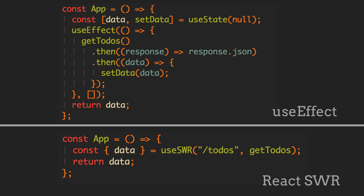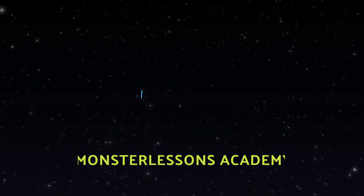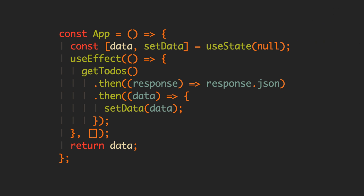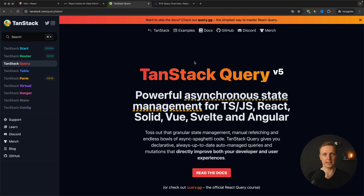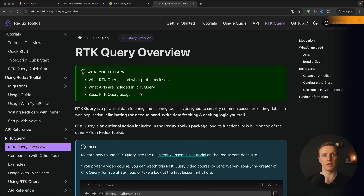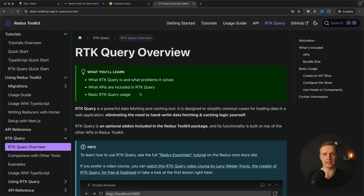In this video you will learn about the library for React called SWR, or stale-while-revalidate, which is backed by Vercel. By default inside React we use useEffect to fetch data from an API and then set it with the useState hook. But this process is quite complicated when you have different API calls, and it can be simplified using libraries like TanStack Query, React Query, or RTK Query.